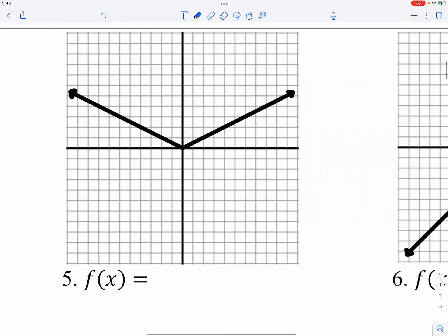And then for graph number five, you see the slope is getting flatter. The slope is getting flatter, and therefore it is going to be one-half absolute value of x.